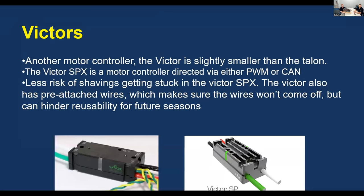Here's another one called the Victor SPX — the lighter weight version of the Talon. It has a lot of similar features but doesn't have the direct encoder. These are half the cost, around $40 to $45, but very useful because they're also CAN bus. These are practical where you're just spinning a wheel and don't need any feedback. If you're doing an intake and just want to spin some wheels and pull in a game piece, these are very practical and easy to use.